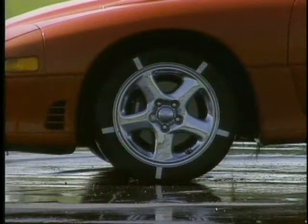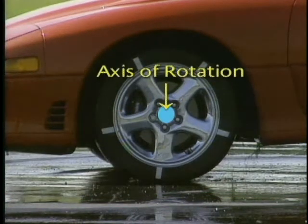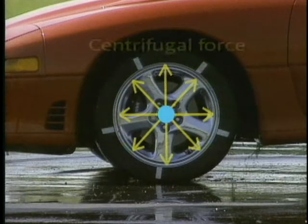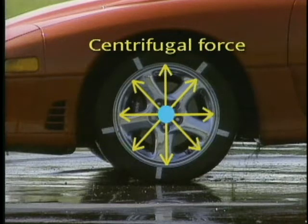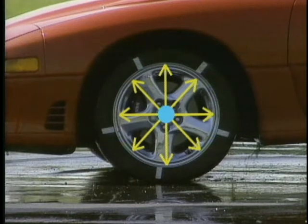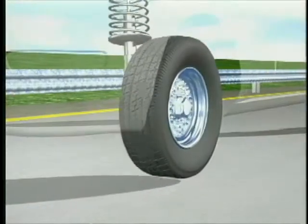Static wheel balance equally distributes the weight of the wheel and tire around the axis of rotation. As centrifugal force is generated by the wheel rotation, the mass of the tire is forced away from the axis of rotation. Centrifugal force will try to move a heavy spot in a tire on a tangent off the axis of rotation.